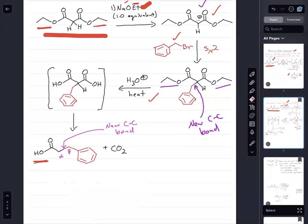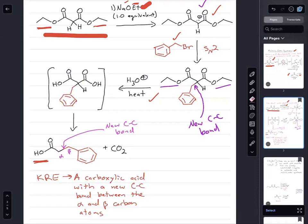And that new carbon-carbon bond is between the alpha and beta carbons of that carboxylic acid. So the malonic ester synthesis is a really good way to make complicated carboxylic acids that contain a new carbon-carbon bond between the alpha and beta carbon atoms.